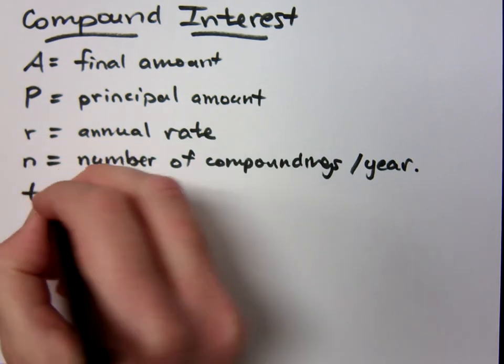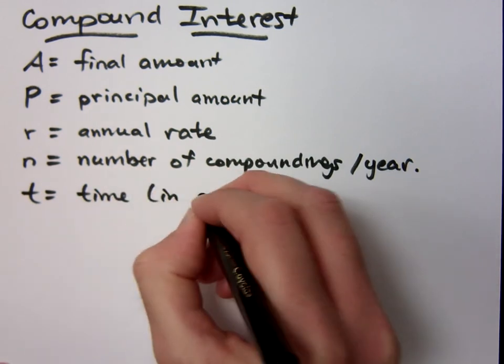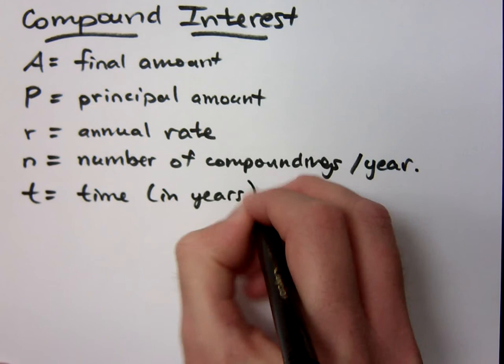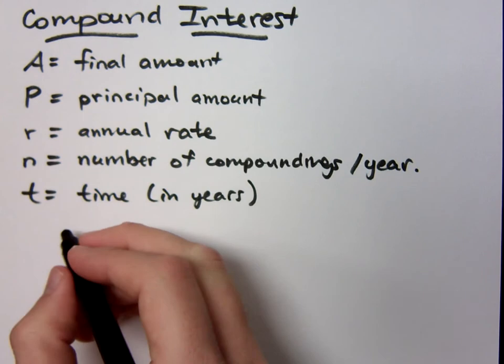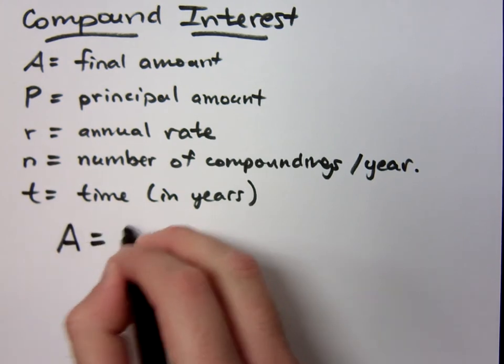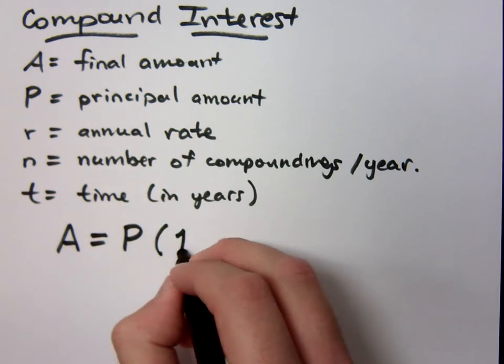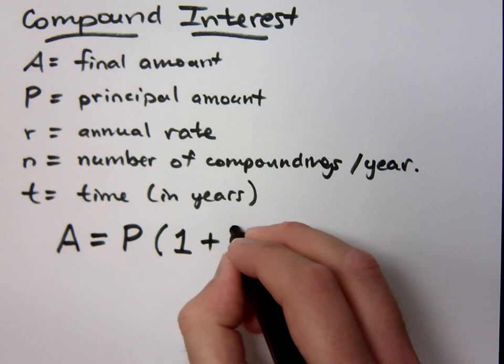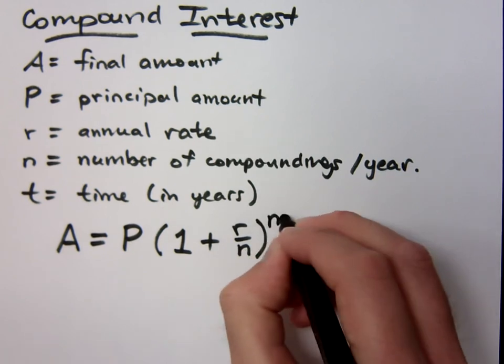And t is equal to the time measured in years. So I'm going to give you a formula. That's what all these letters represent. Your formula is the following: the amount of money you have in your account is the principal times 1 plus r divided by n raised to the nt.